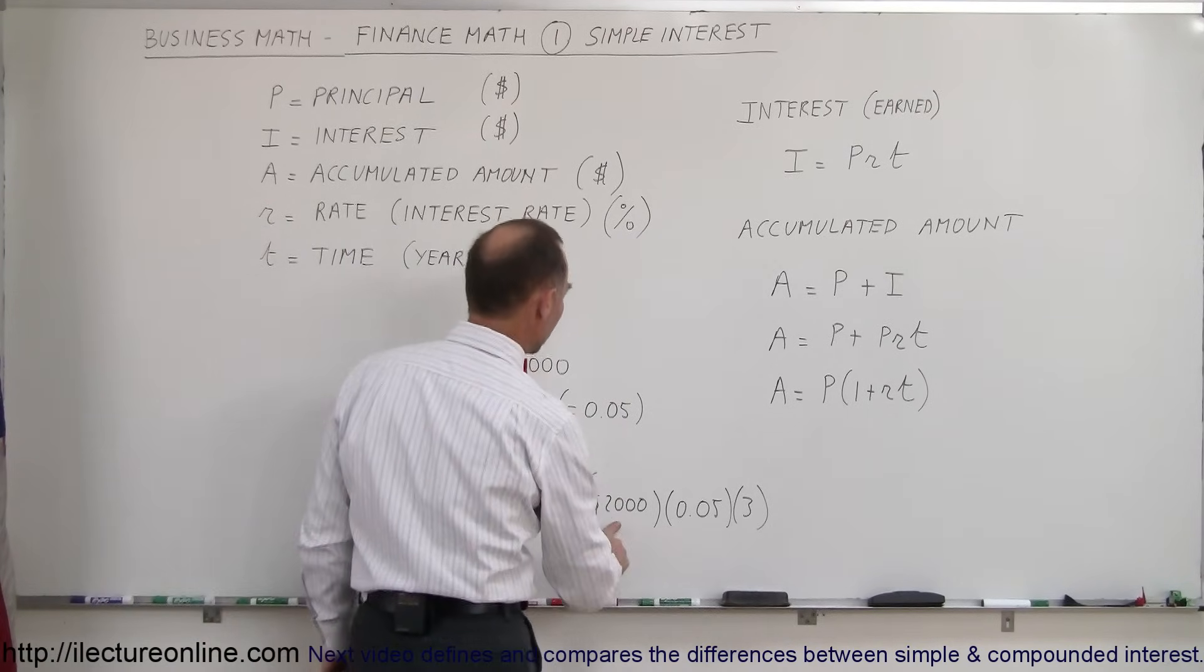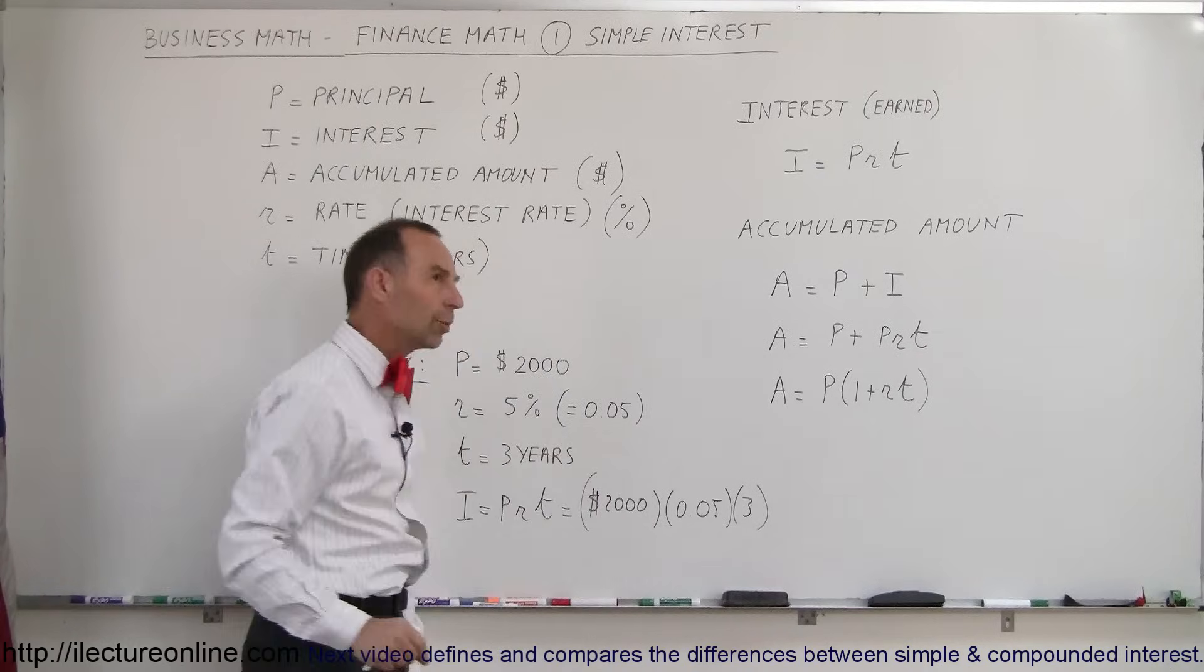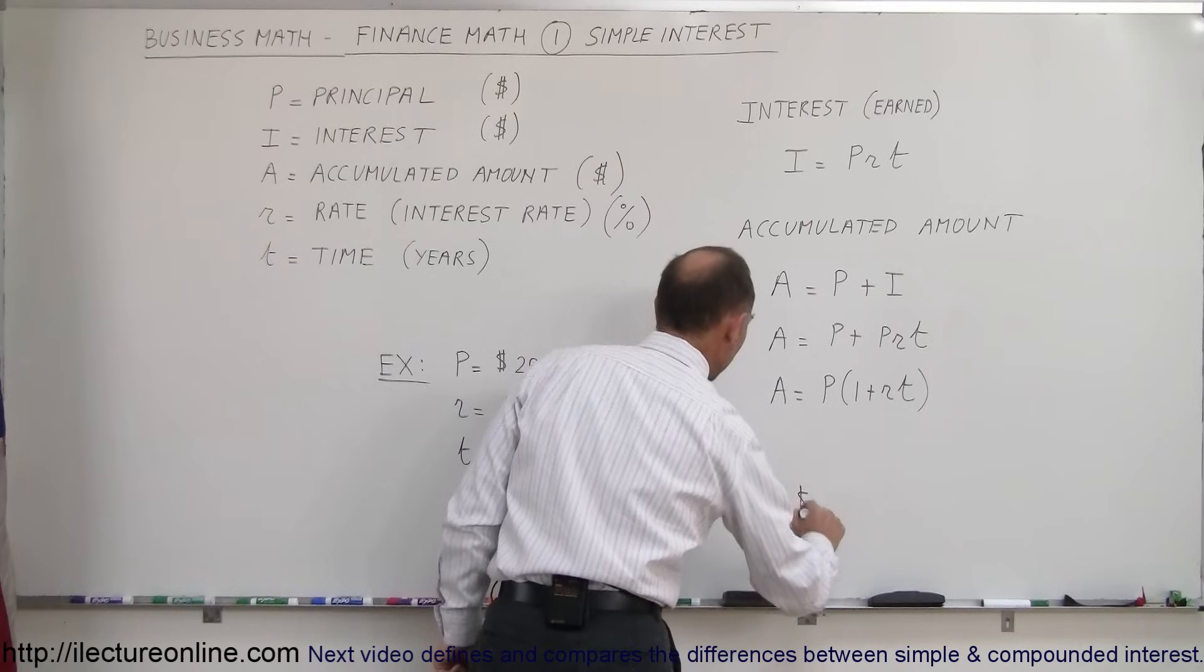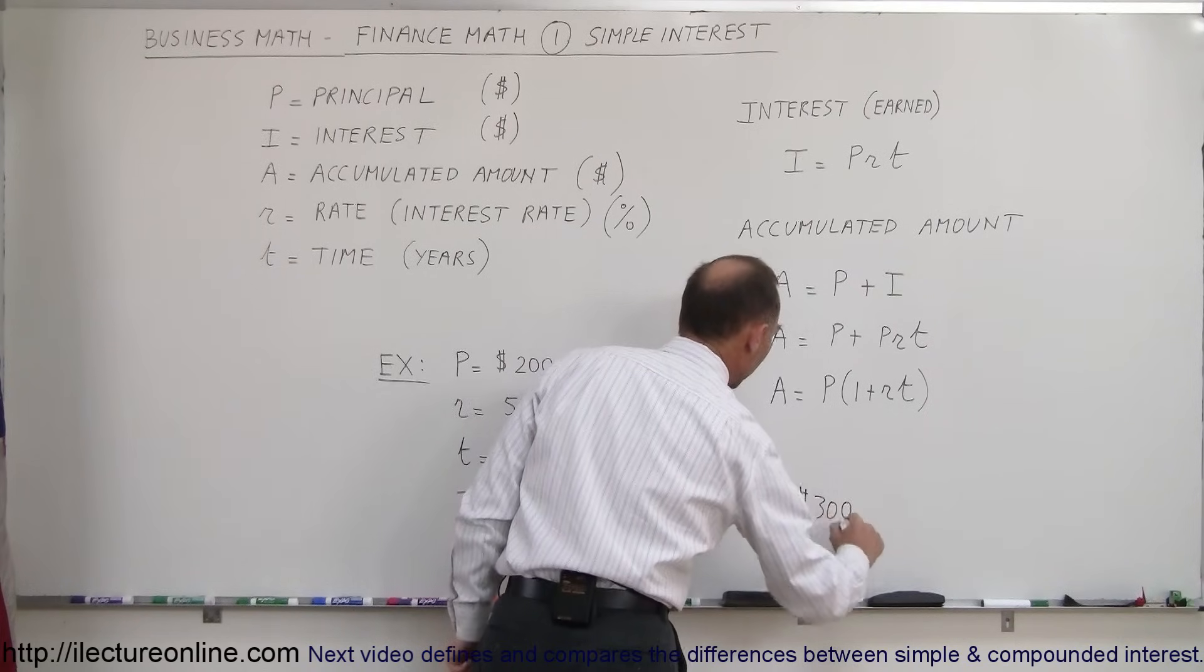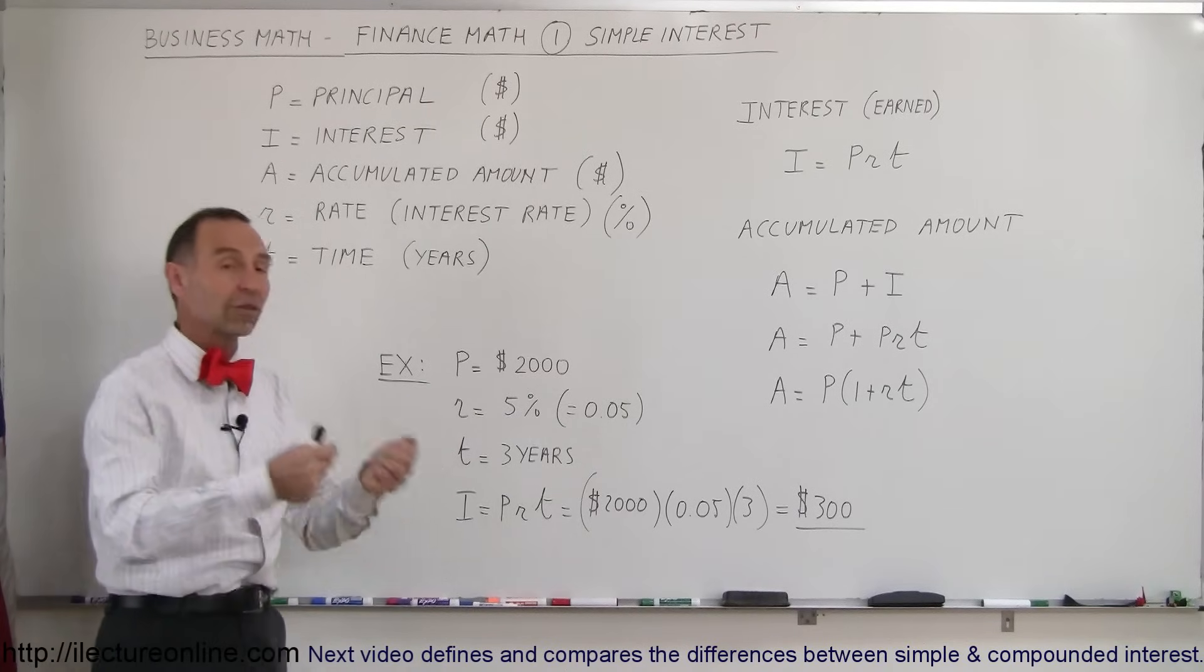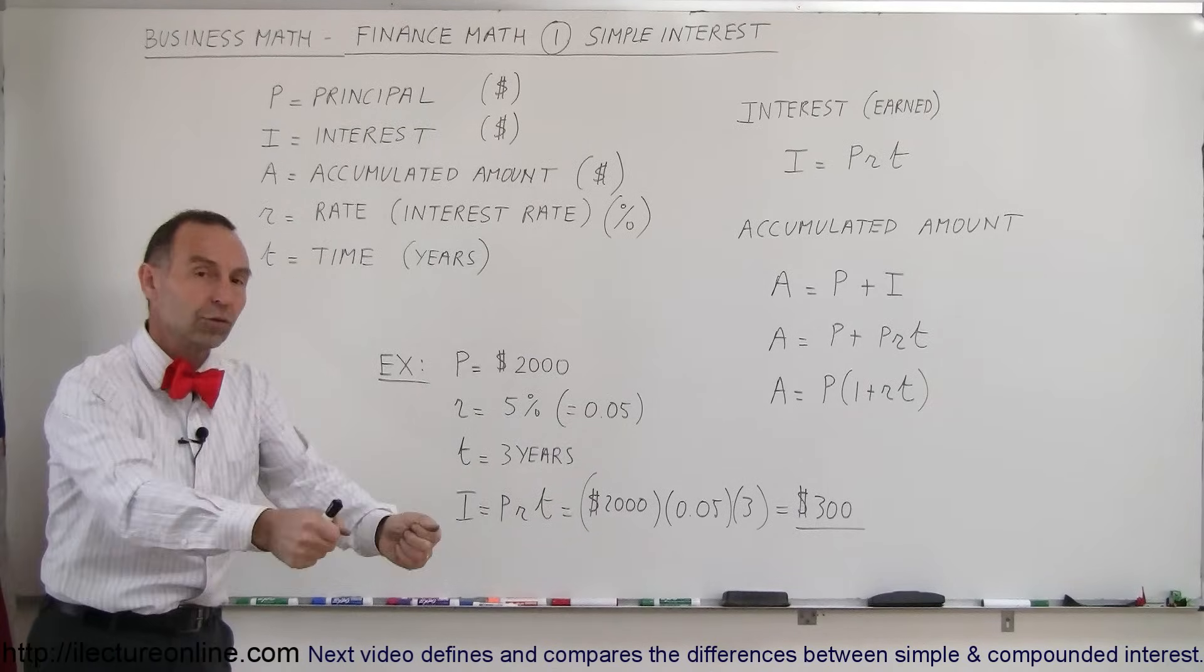So what is the total amount? Let's see here. 5% on $2,000 is, that would be $100 times three, so that would earn you $300 after three years. So after three years, you would get your $2,000 back. They will pay an additional $300.